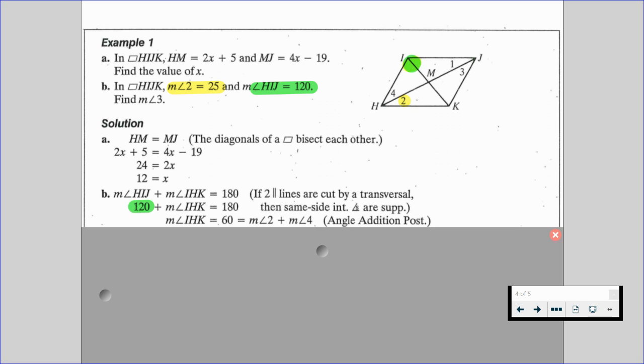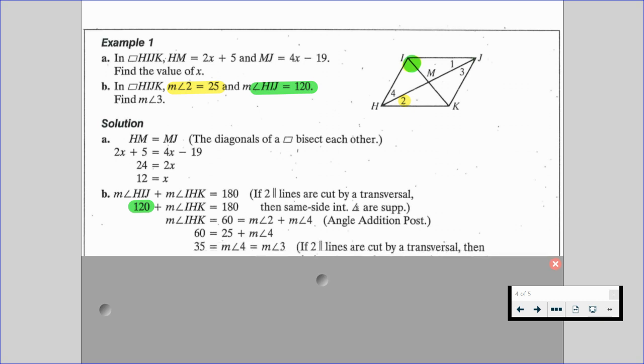But again, remember, IHK is composed of angle 2 and angle 4. So really, we have 60 is equal to 25 plus the measure of angle 4 because the measure of angle 2 was 25. So that was a multi-step problem there. And when we solve for the measure of angle 4, we get 35.